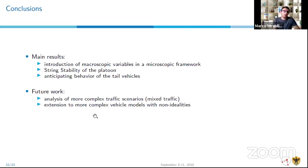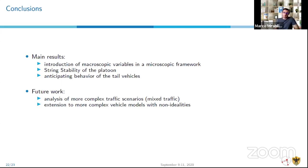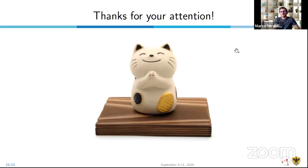In conclusion, our main results are: introduction of microscopic variables in a microscopic framework obtaining a mesoscopic dynamical model, asymptotic string stability of the platoon, and an anticipating behavior of tail vehicles shown in simulation. Future work includes analysis of more complex traffic scenarios such as mixed traffic (autonomous and non-autonomous vehicles) and extension to more complex vehicle models with non-idealities including communication delays and actuation delays.